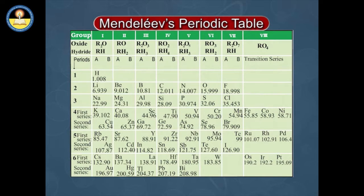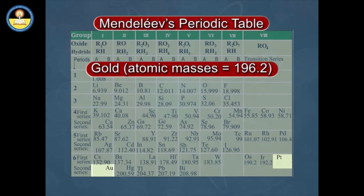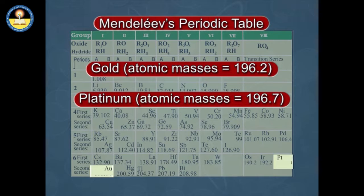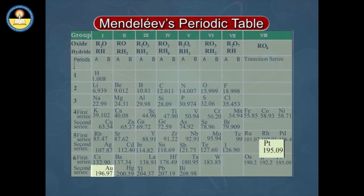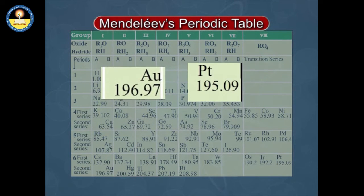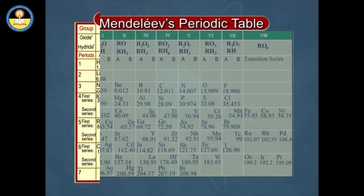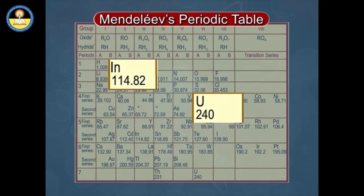At the time when Mendeleev gave his periodic table, gold and platinum were known to have atomic masses of 196.2 and 196.7 respectively. But Mendeleev placed gold after platinum in the periodic table and predicted that the atomic masses of gold and platinum were incorrect. Later on, it was found that the atomic mass of platinum was 195.09, which was lower than that of gold, 196.97. In a similar way, atomic masses of indium and uranium were also corrected.